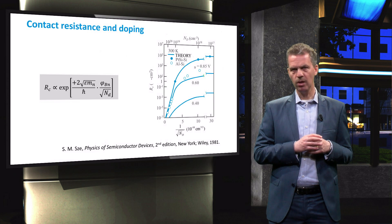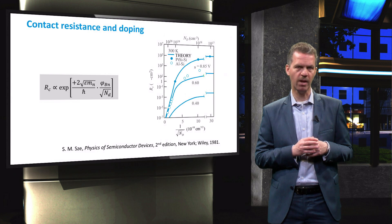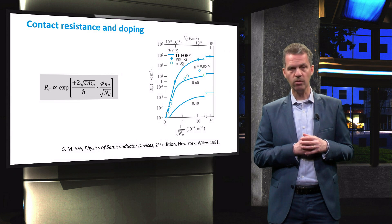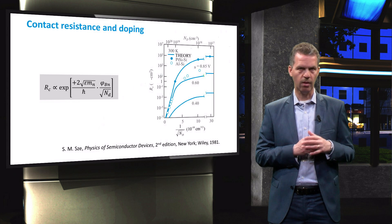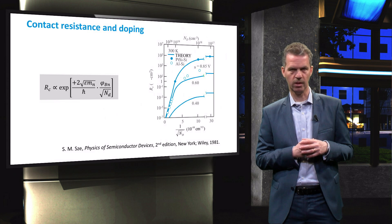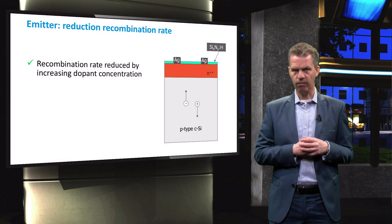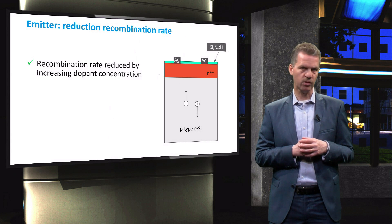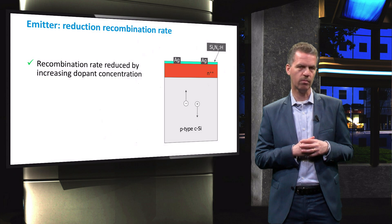This becomes even more clear when we look at this plot of the specific contact resistance versus doping concentration for different metal-silicon combinations. Note that the work function of silver is comparable to that of aluminium, with 4.26 V and 4.28 V respectively. Increasing the doping concentration of the emitter seems to be the perfect solution to take on surface recombination, emitter resistance, and contact resistance at once, all resulting in a lower recombination rate.